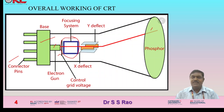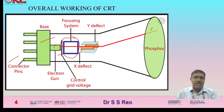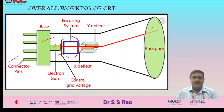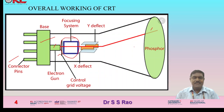Once the electron beam strikes the phosphor, the phosphor-coated screen glows. Color combinations — red, blue, and green (RGB) — are used to enhance color images, allowing you to see full color images on the screen.